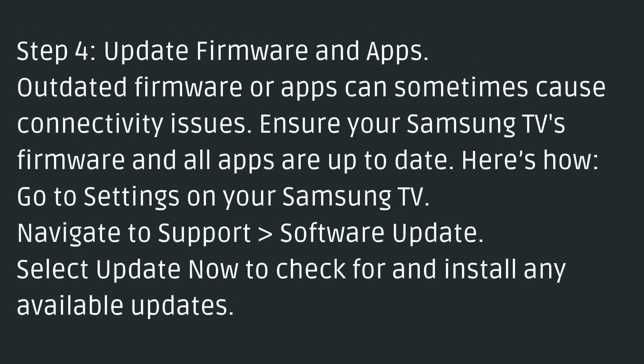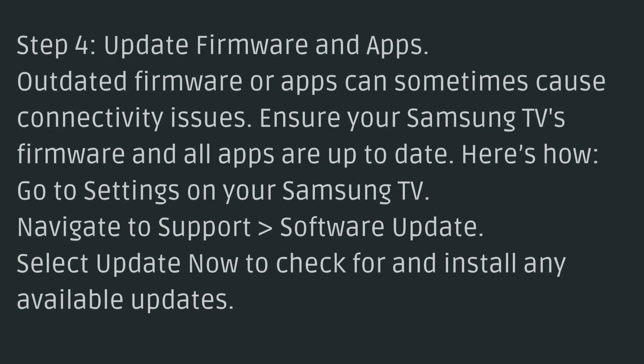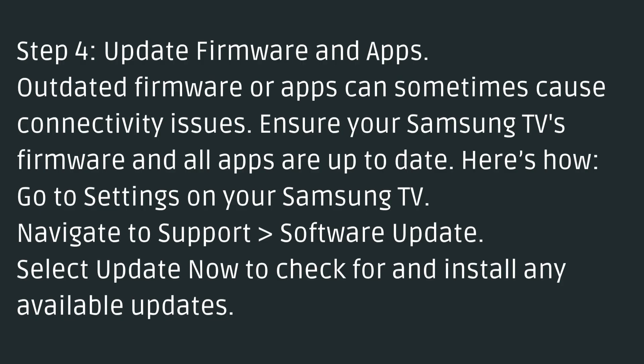Step 4: Update firmware and apps. Outdated firmware or apps can sometimes cause connectivity issues. Ensure your Samsung TV's firmware and all apps are up to date. Go to Settings on your Samsung TV, navigate to Support and Software Update, then select Update Now to check for and install any available updates.